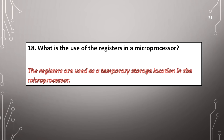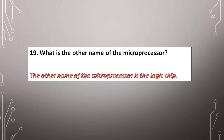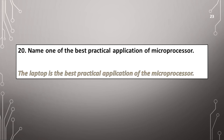What is the use of registers in a microprocessor? The registers are used as a temporary storage location in the microprocessor. What is the other name of the microprocessor? The other name of the microprocessor is the logic chip. Name one of the best practical applications of the microprocessor. The laptop is the best practical application of the microprocessor.